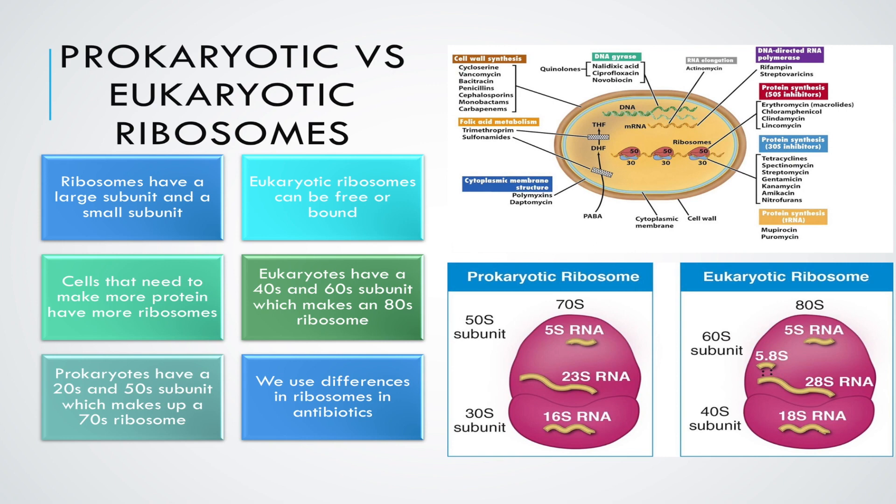Before we begin let's remind ourselves that ribosomes are organelles that are responsible for making protein. Ribosomes are made up of RNA and proteins and each ribosome has two separate RNA protein complexes known as the small and large subunits.